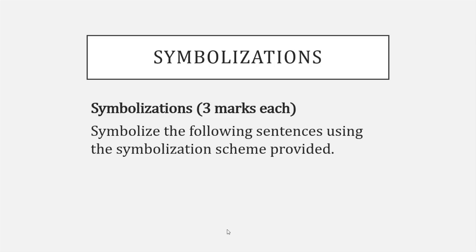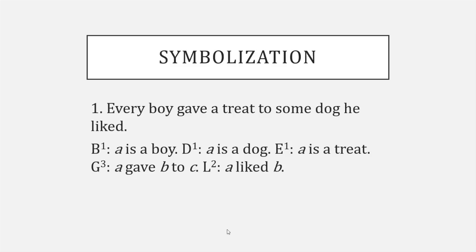Just like on test one and test two, you'll see the following prompt for symbolizations: 'Symbolize the following sentences using the symbolization scheme provided.' For example, question one might read: 'Every boy gave a treat to some dog he liked.' The scheme will be provided. So B1 — the '1' indicates it's a one-place predicate, and the 'A' says whatever we're plugging in for the variable is a boy.